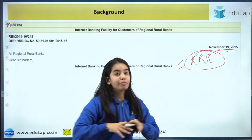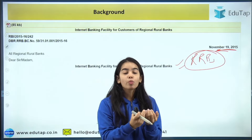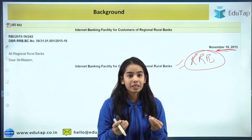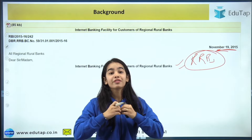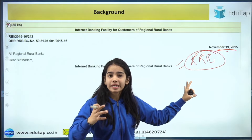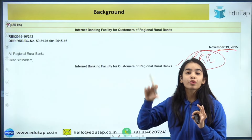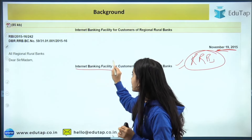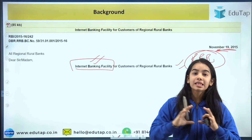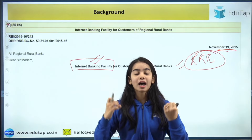The scope of services that RRBs provided to rural India and their customers was quite limited. Facilities like internet banking were not significantly developed under RRBs. Until 2015, RRBs were not allowed to provide internet banking services because they were only created to provide basic banking and financial services.